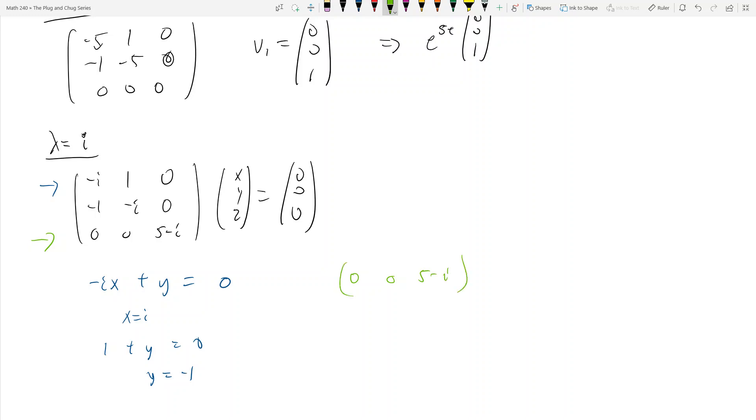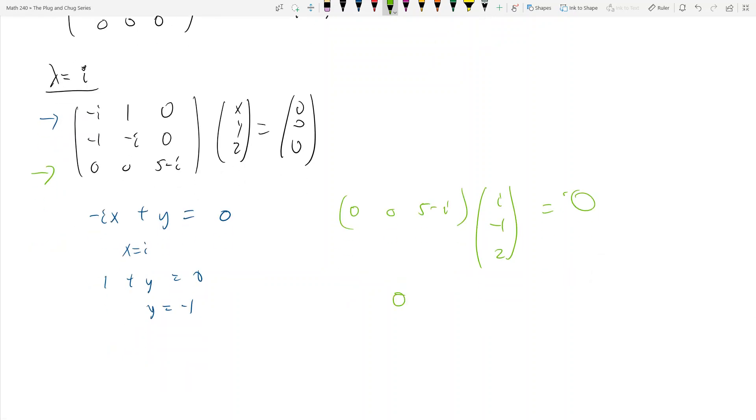And now remember, x equals i and y equals negative 1. So this is i, negative 1, z. And this has to equal 0, right? So I get 0 plus 0 plus 5 minus i times z is equal to 0. But what does that make z? Well, that just, I can just let z be 0, right?